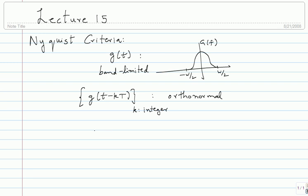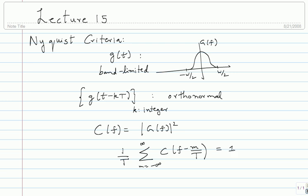What does that condition work out to? You think of C of F which is mod G of F squared. Then summation: 1/T times the sum from m equals minus infinity to infinity of C of F minus m by T should equal 1. That's the Nyquist criteria. The proof is quite simple and elementary, with some subtle points about converting discrete time to continuous time and using the relationship between the two Fourier transforms.